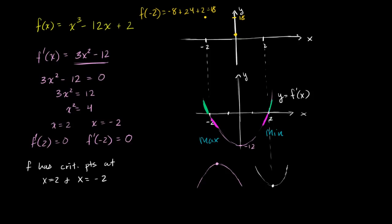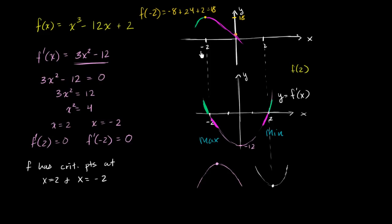The derivative going into negative 2 is positive — we are increasing — and then after we cross that point the slope becomes negative. So the function increases to the maximum at negative 2 comma 18, then decreases. As we approach x equals 2, what is f of 2? F of 2 equals positive 8 minus 24 plus 2, which is 10 minus 24, equal to negative 14. So f of 2 is negative 14.